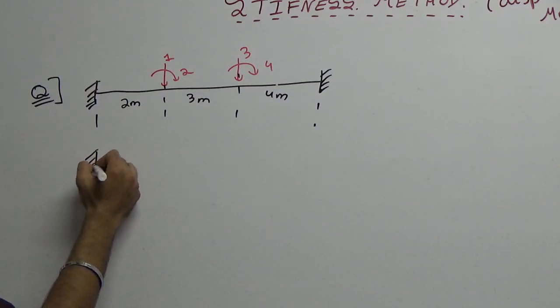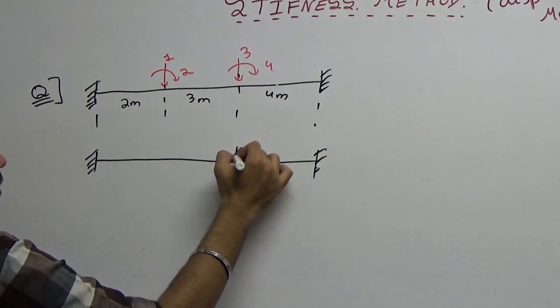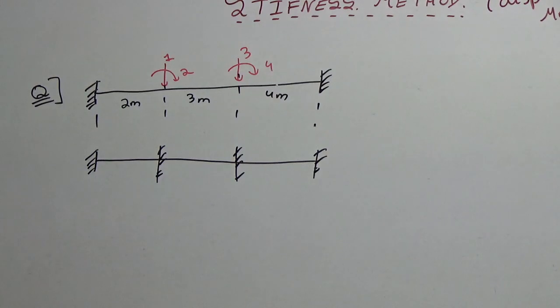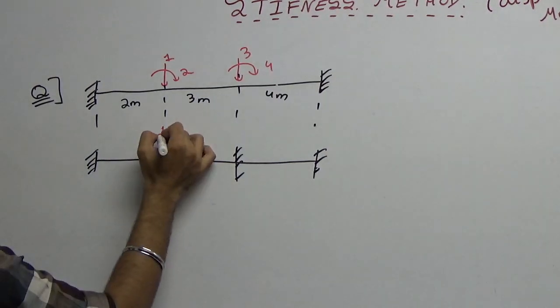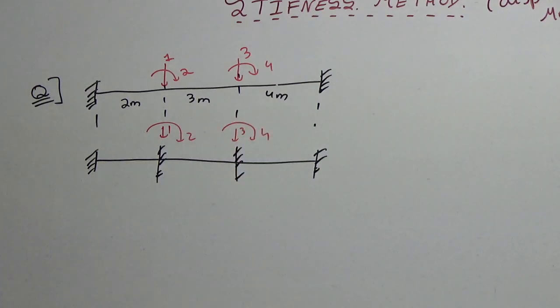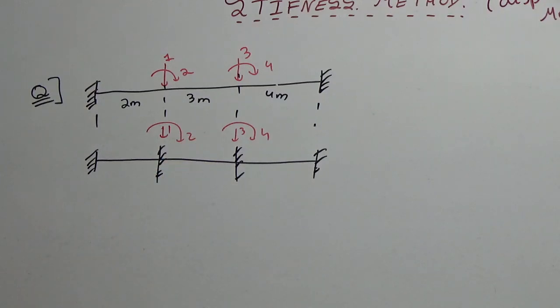You restrain the structure. When you restrain it, you make it fixed here, here and here. This is how you restrain. And what are your coordinates? Again, I am just writing down here: 1, 2, 3 and 4. That is your third step over. The next step is to apply displacements one by one at each coordinate. So let's do that.